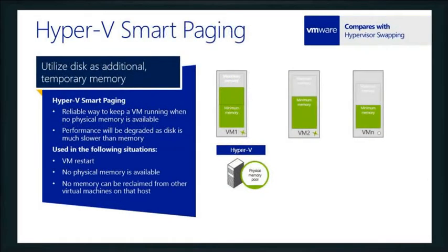Smart paging is all about when to use memory versus actual hard drive space. There will be times when you've given a virtual machine a certain amount of RAM and it's not using it, but there might be requests that need to leverage that RAM. Hyper-V can move it down to the page file or disk while that request is being used, and the minute that VM says it needs that memory back, it gives it back. That's very similar to what hypervisor swapping does for VMware.